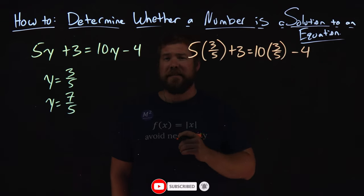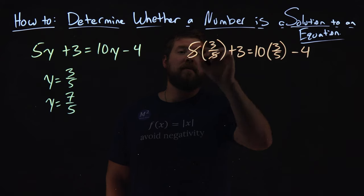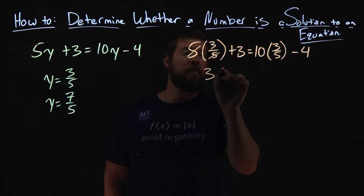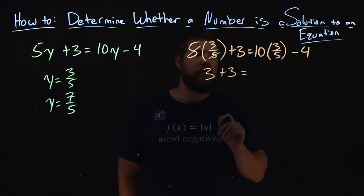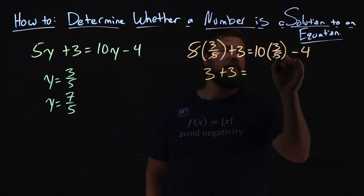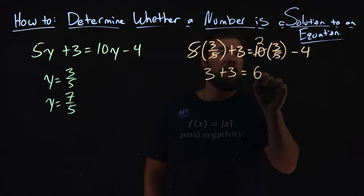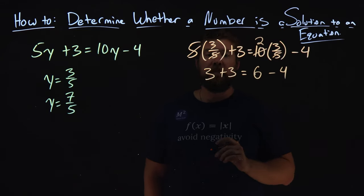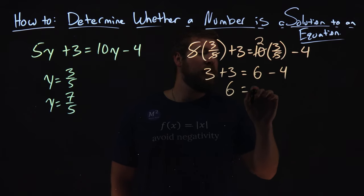Now I want to simplify this. 5 times 3 fifths, the 5s can cancel out, we're left with 3 plus 3, equals 10 times 3 fifths. 10 and 5 cancel, we have a 2 up here. 2 times 3 gives me 6 minus 4. 3 plus 3 is 6, and 6 minus 4 is 2.